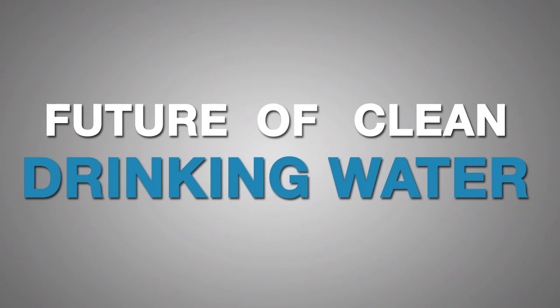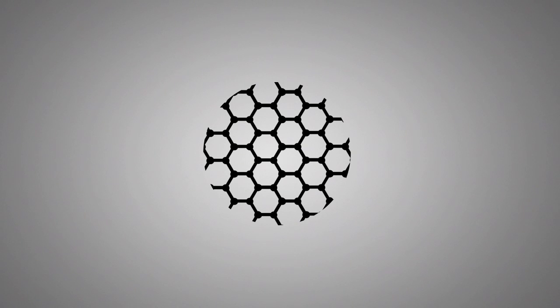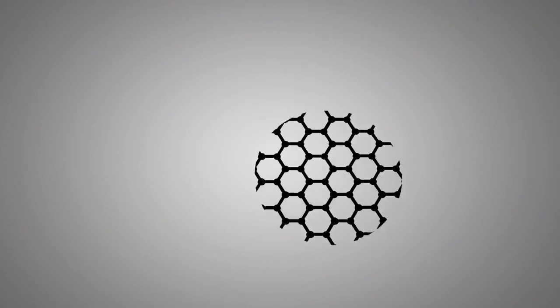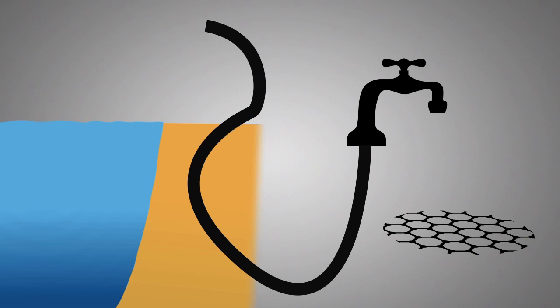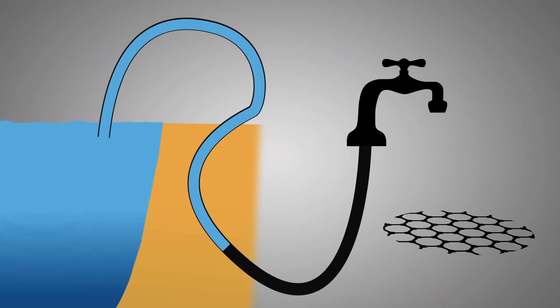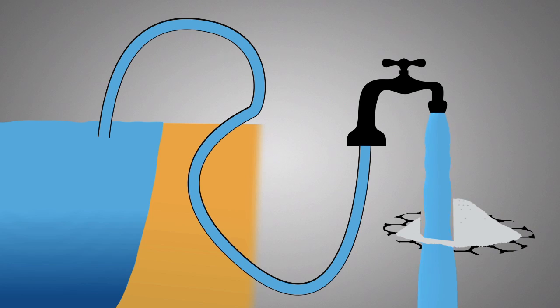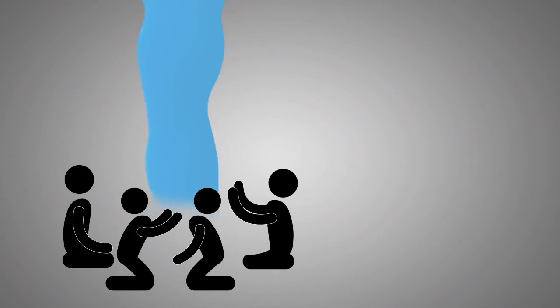But its most important use may be in the future of clean drinking water. Graphene's ability to let nothing pass through it except water makes it the world's greatest filter. Graphene could cheaply and easily remove salt from seawater, potentially turning the oceans into a vast drinking supply for thirsty populations.